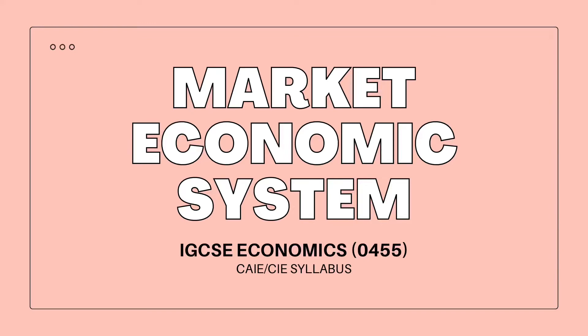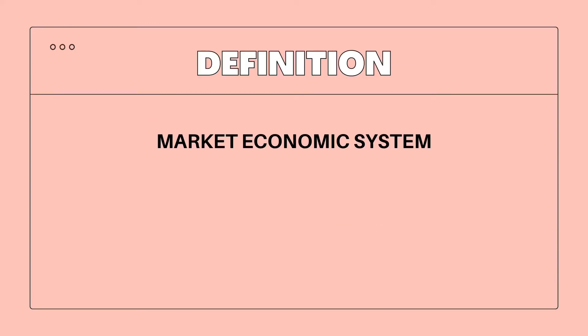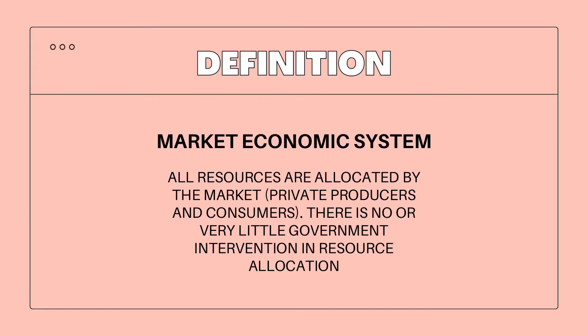In this video, we will be discussing market economic system. I will start by defining market economic system. Market economic system is when all resources are allocated by the market, which are the private producers and consumers. There is no or very little government intervention in the allocation of resources.